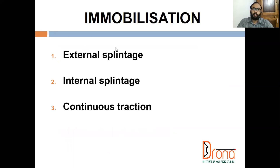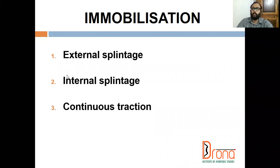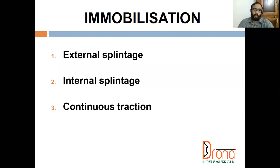Coming to immobilization, three techniques can be used. The first is external splintage. The second is internal splintage, which orthopedic surgeons perform in needed cases — internal splintage is not needed in all cases. If conservative management or closed manipulative reduction is not possible, internal splintage is needed, using K-wires, plates, or metal screws.